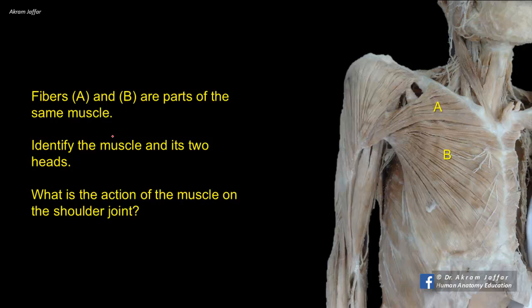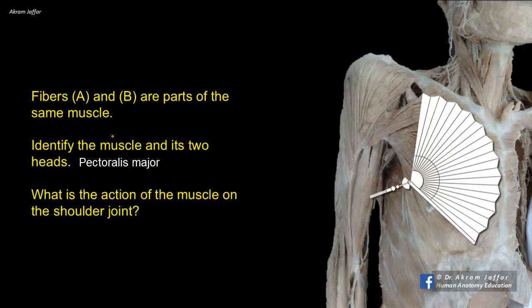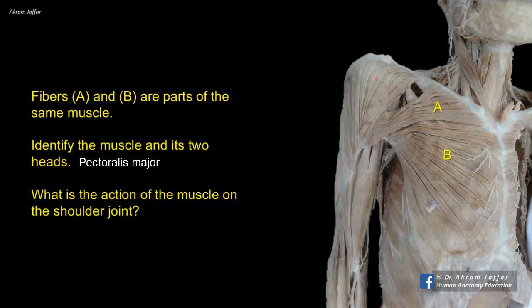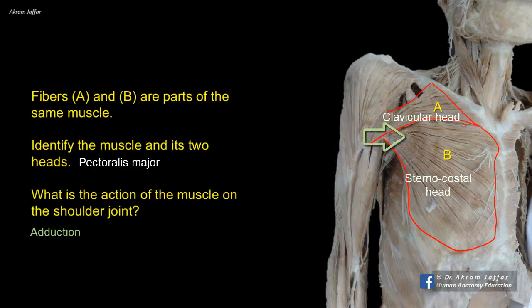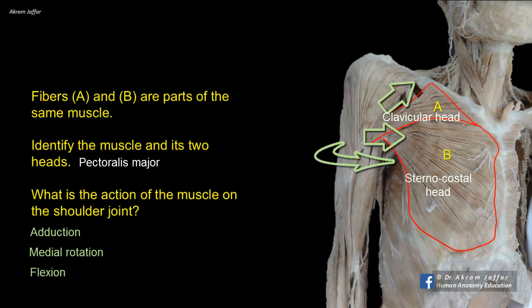Fibers A and B are parts of the same muscle. Identify the muscle and its two heads. What is the action of the muscle on the shoulder joint? The muscle is pectoralis major. It is a large triangular muscle, described in some textbooks as fan-shaped. It is attached by means of two heads: a clavicular head, A, which arises from the medial half of the clavicle, and a sternocostal head, B, which is attached to the anterior surface of the sternum and upper six costal cartilages. The muscle fibers converge to be inserted into the lateral lip of the intertubercular groove of the humerus. It is thus an adductor and medial rotator of the arm at the shoulder joint. The clavicular head alone also flexes the humerus.